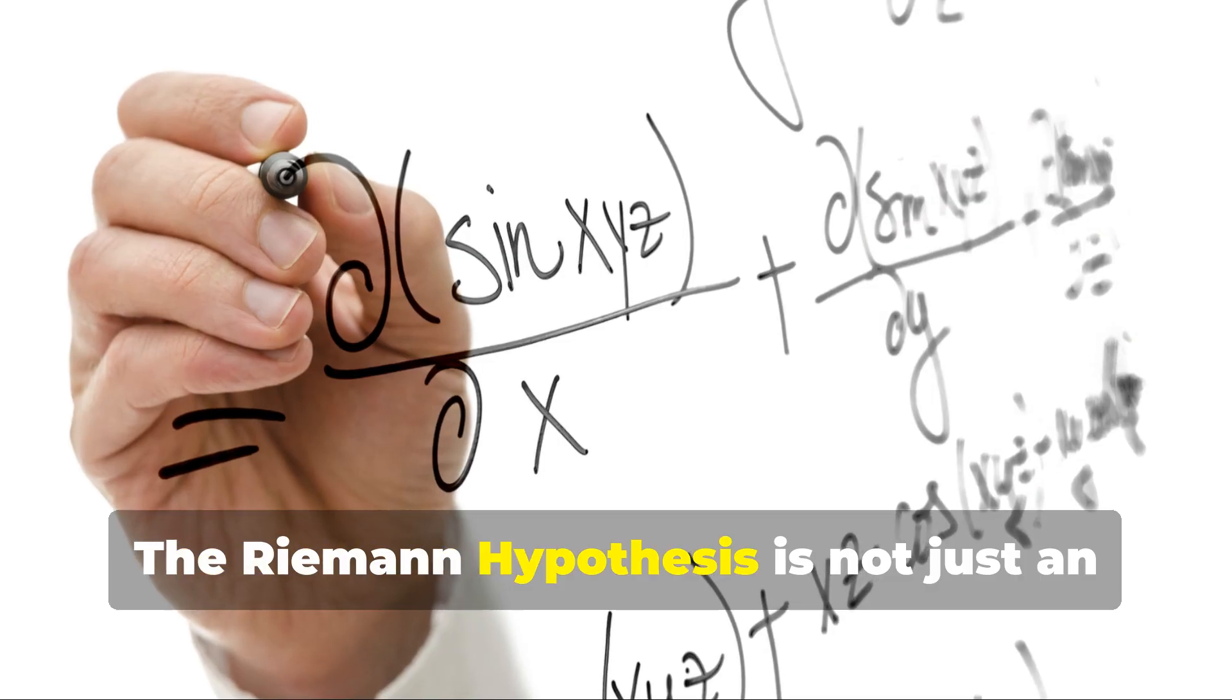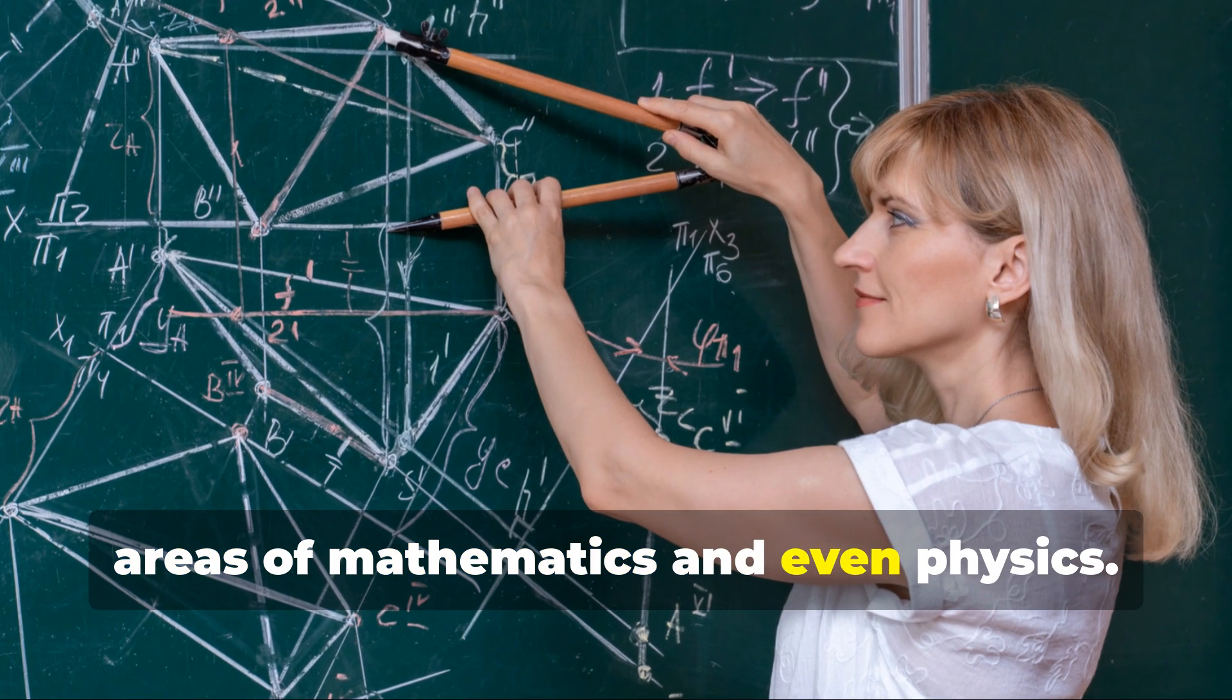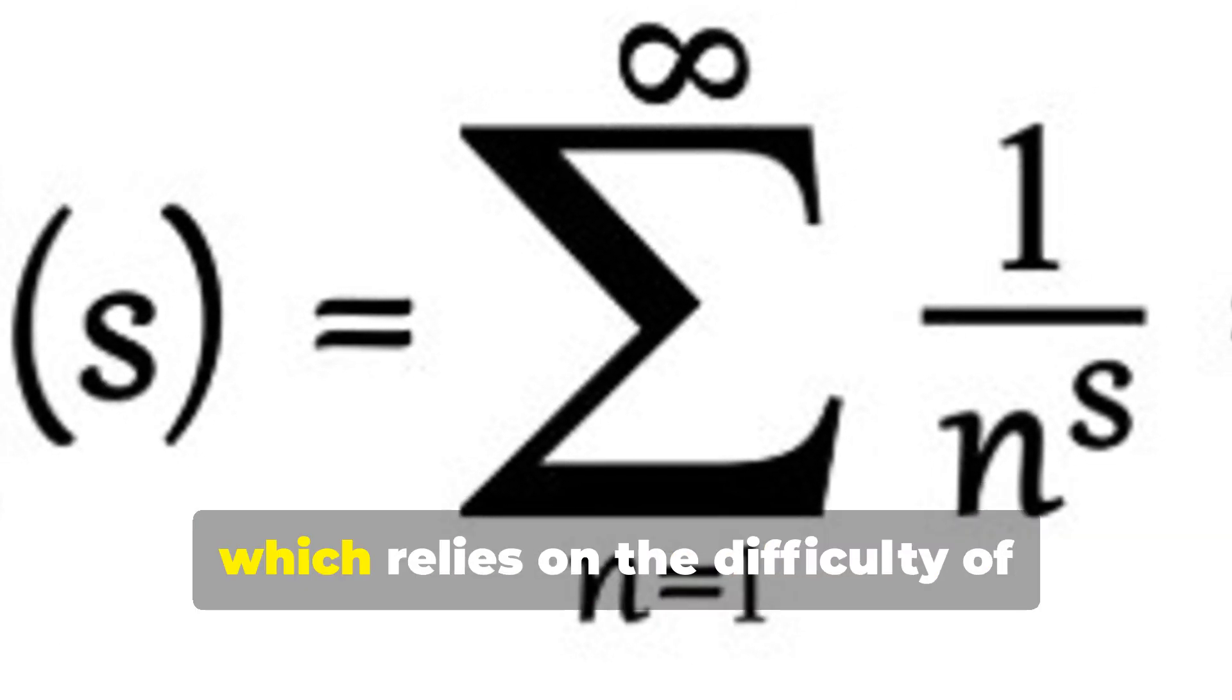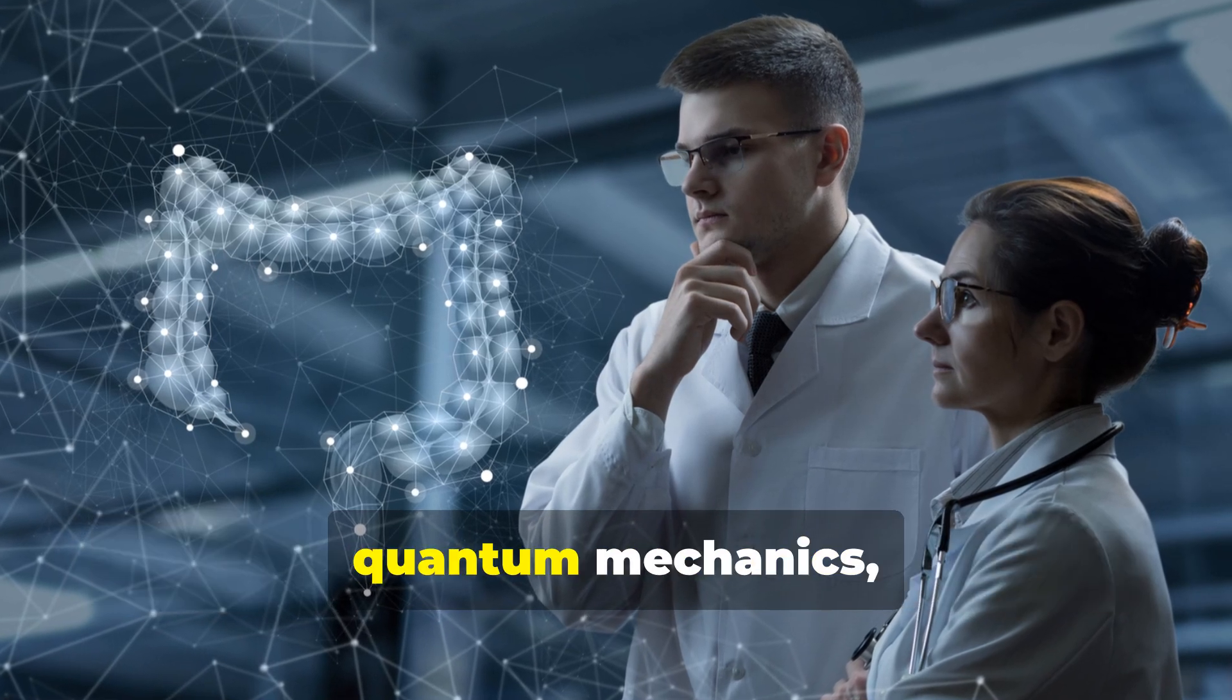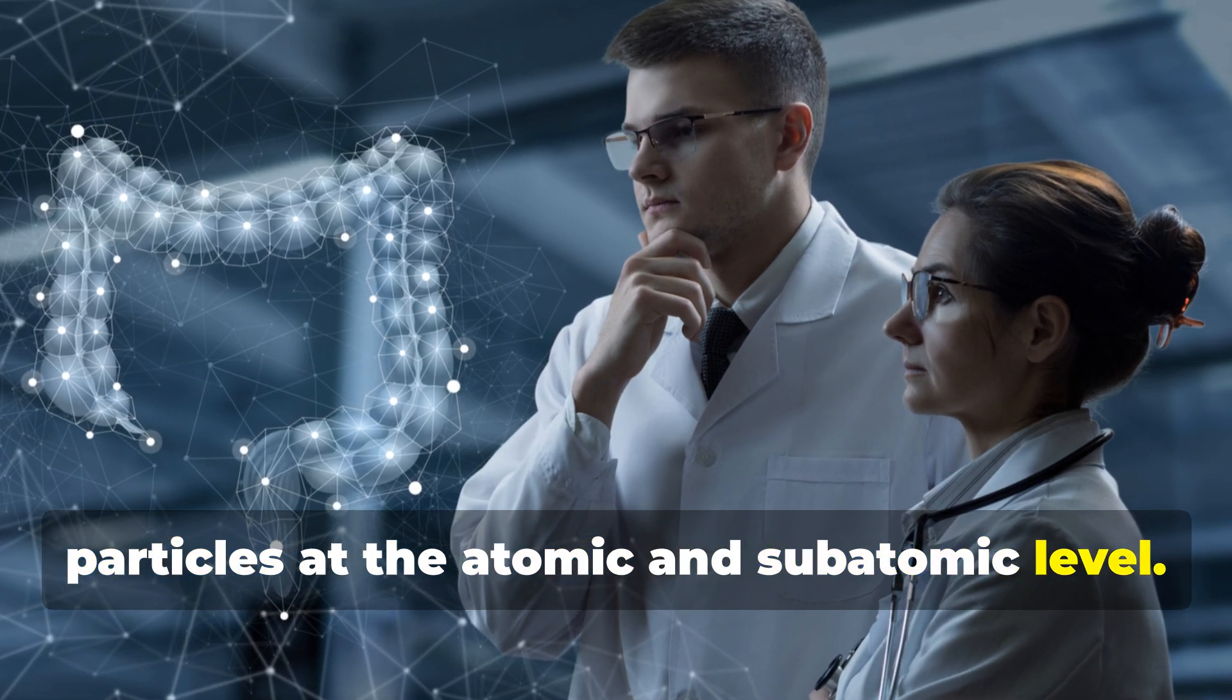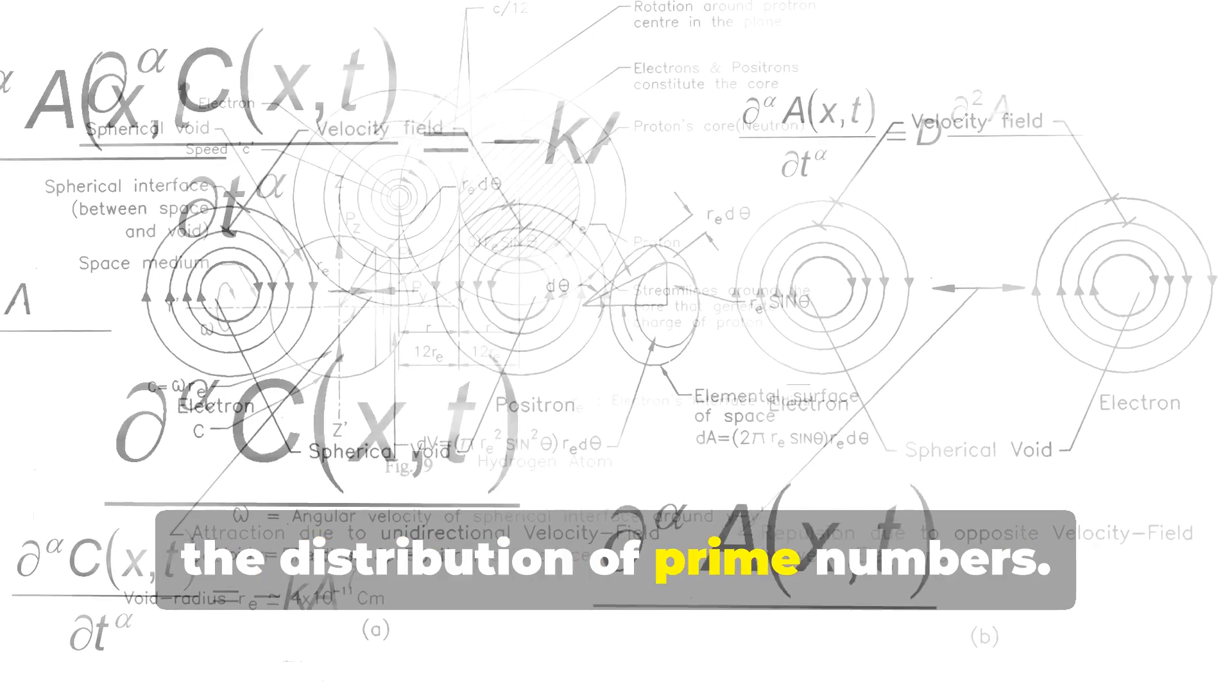The Riemann hypothesis is not just an abstract mathematical puzzle. It has profound implications for other areas of mathematics and even physics. The distribution of prime numbers affects cryptography, which relies on the difficulty of factoring large numbers into primes. The hypothesis also has connections to quantum mechanics, the theory that governs the behavior of particles at the atomic and subatomic level. The spacing between energy levels in certain quantum systems seems to mirror the distribution of prime numbers.